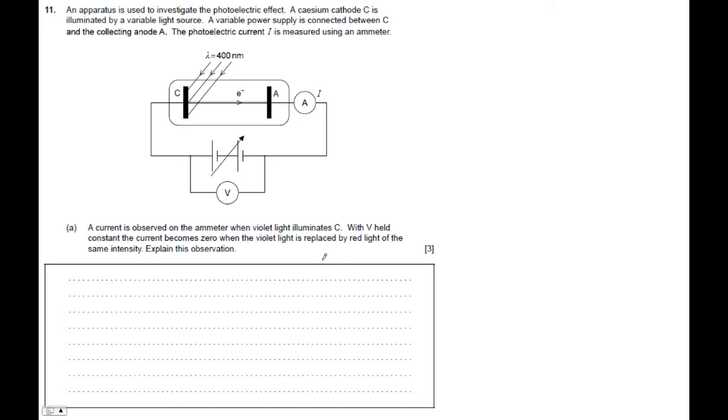This is a photoelectric effect question. An apparatus is used to investigate the photoelectric effect. A cesium cathode is illuminated by a variable light source.